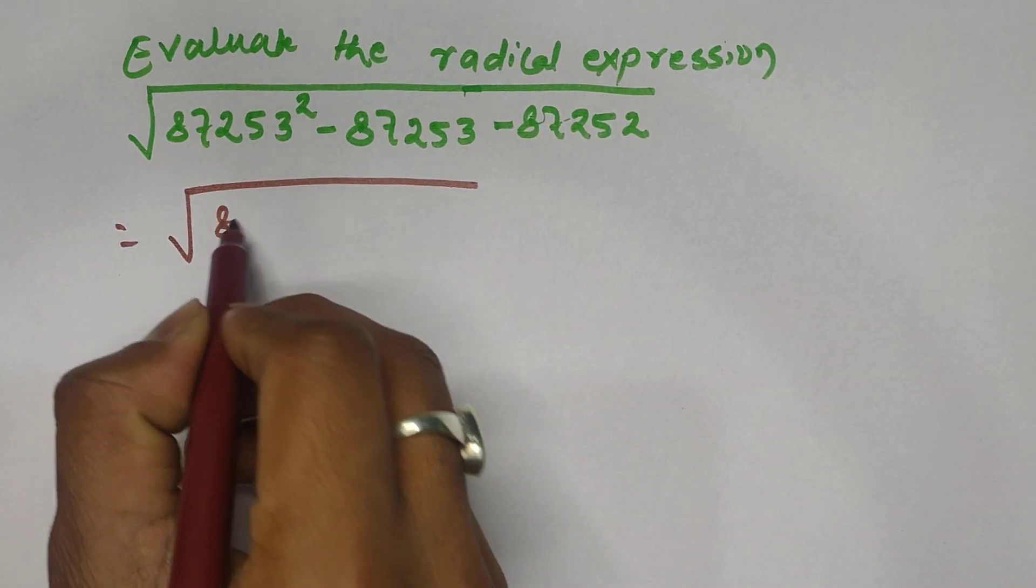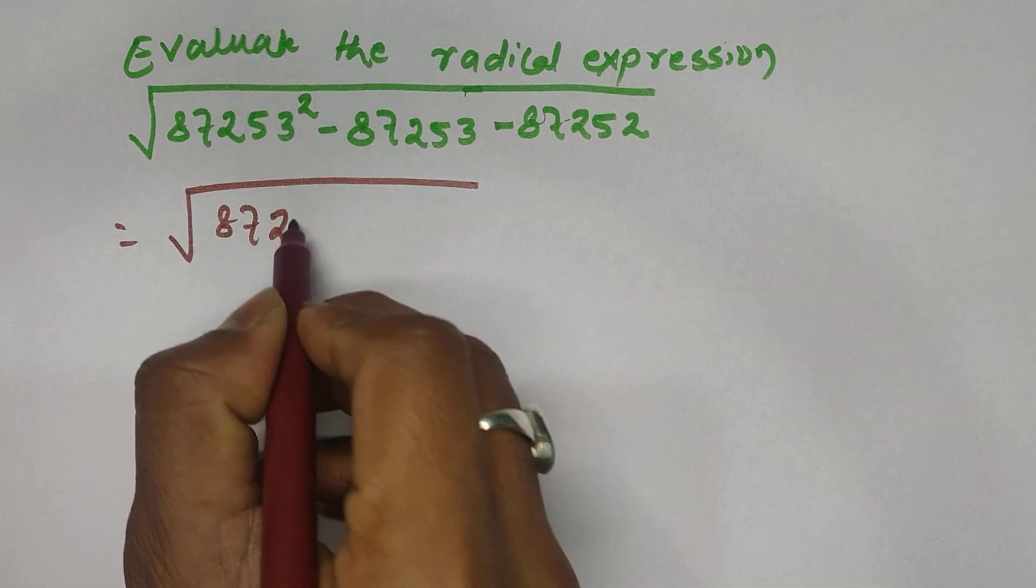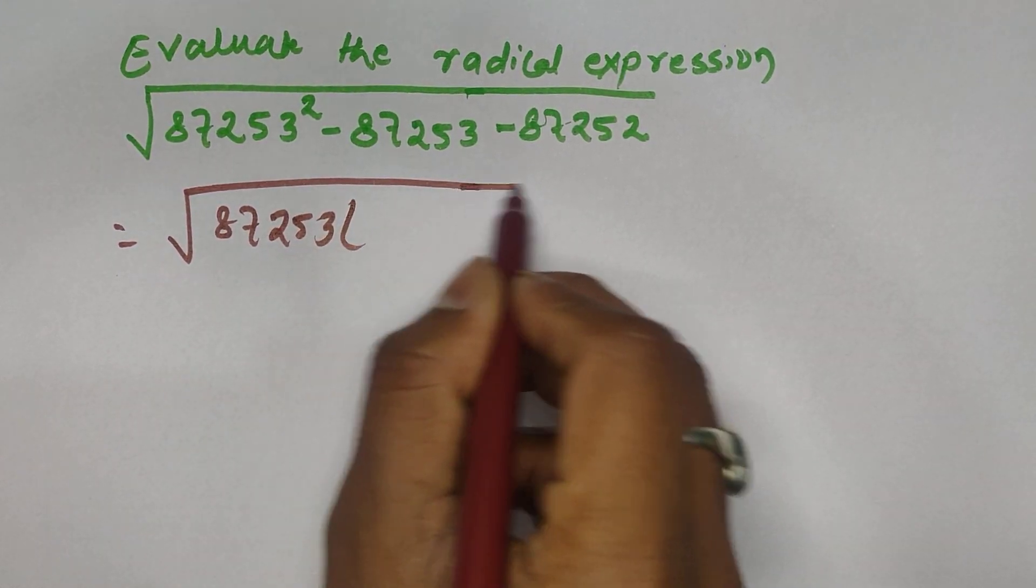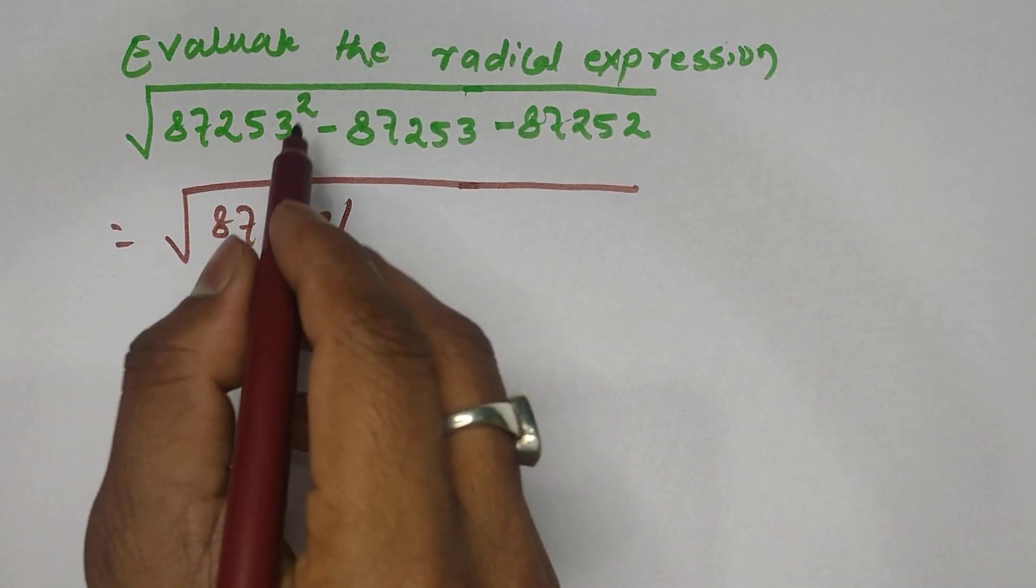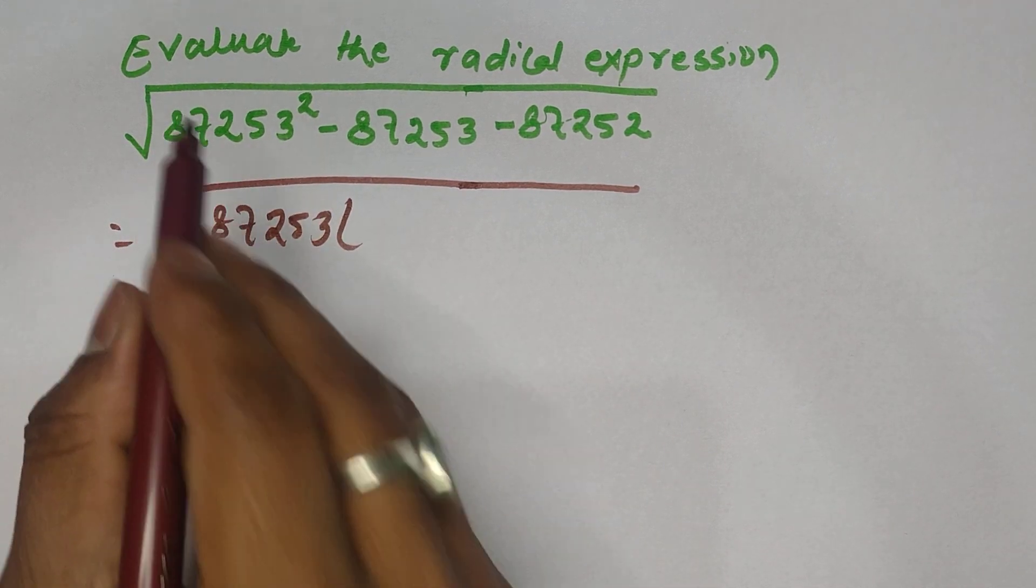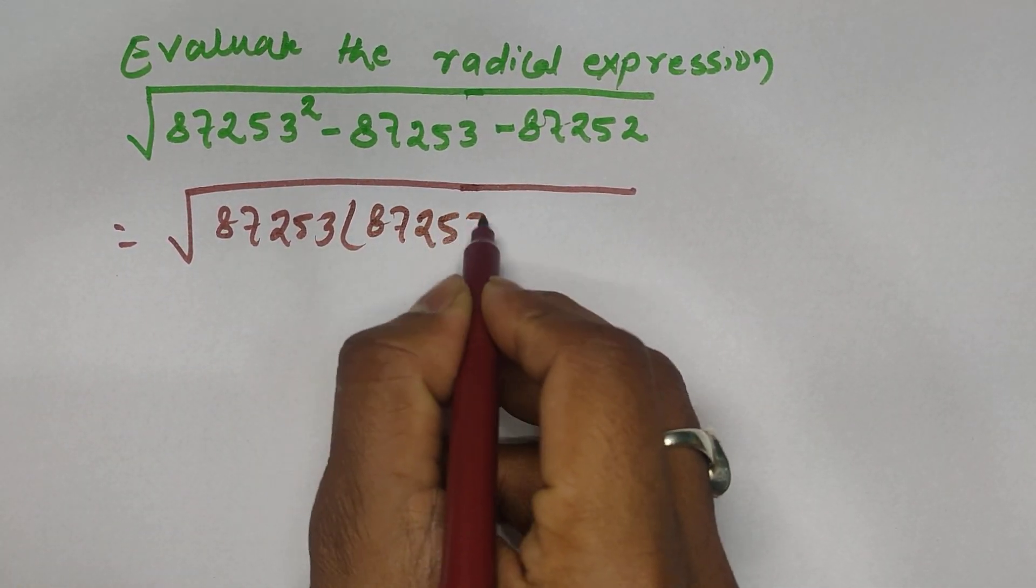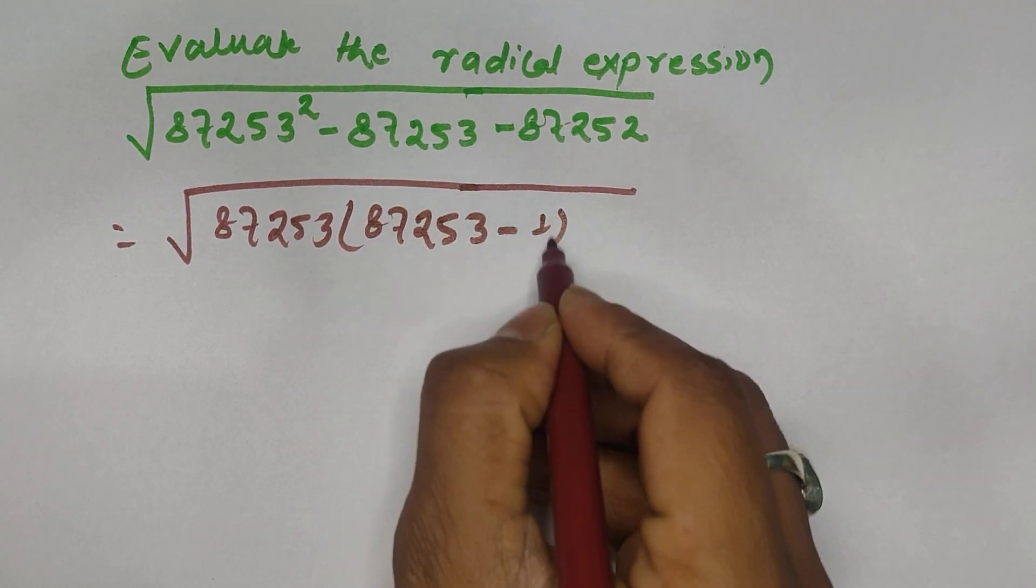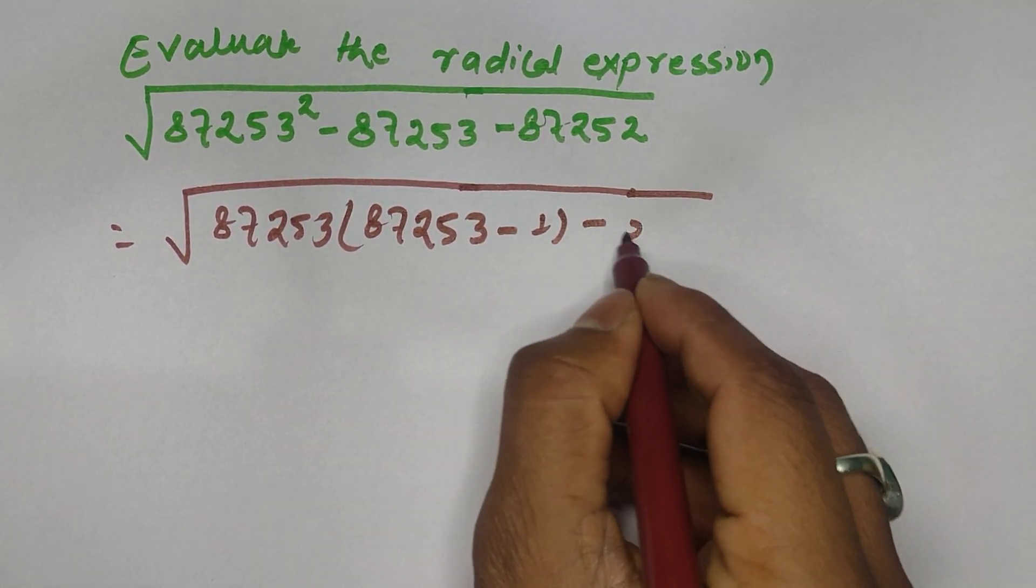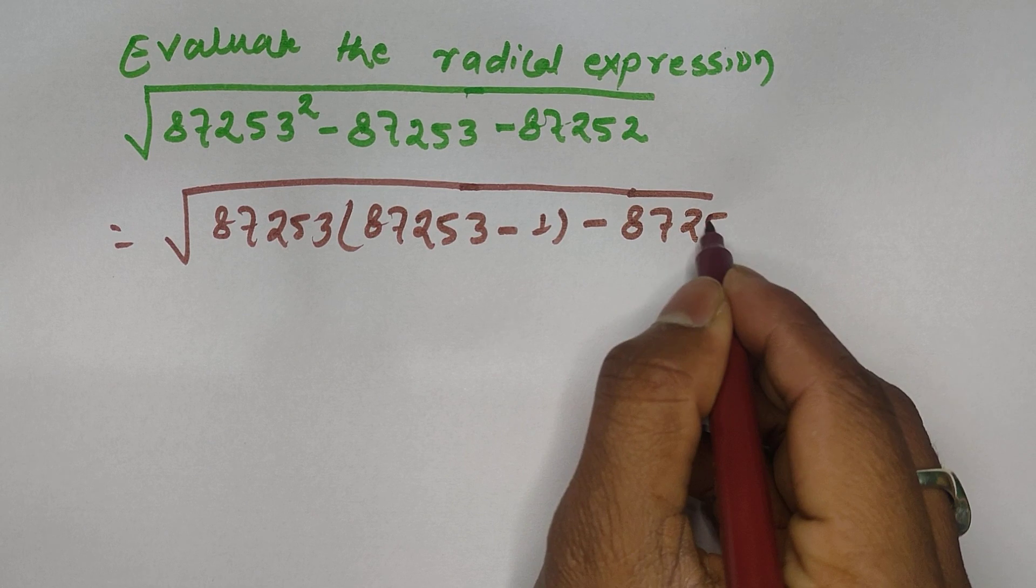The common is 87253. The remaining one is, from here one is taken as common and one is remaining, so the remaining one is 87253, and here one is remaining, and minus this one, the same 87252.